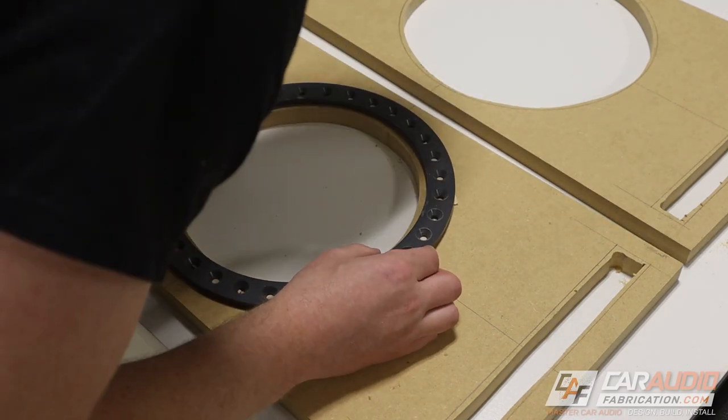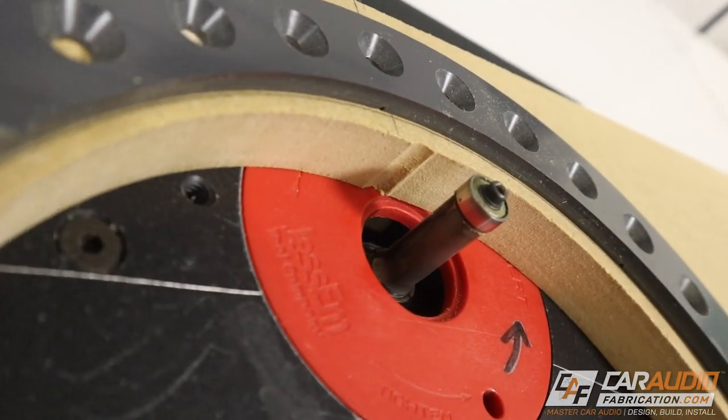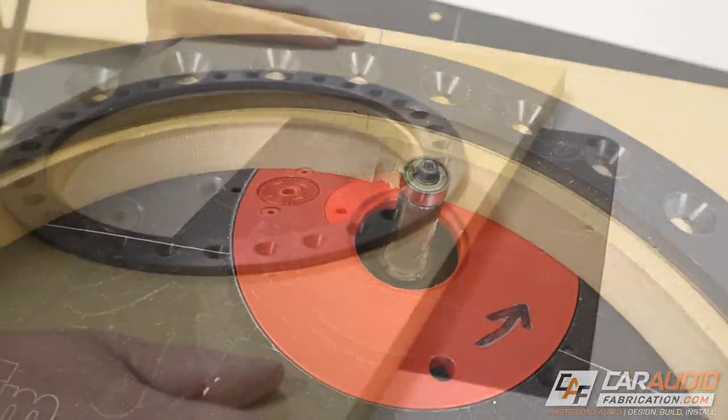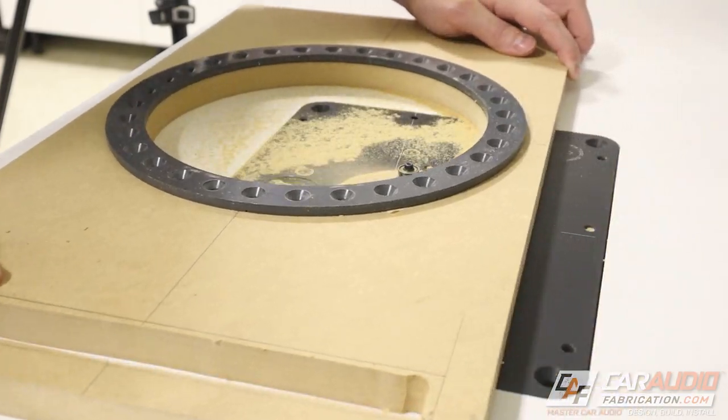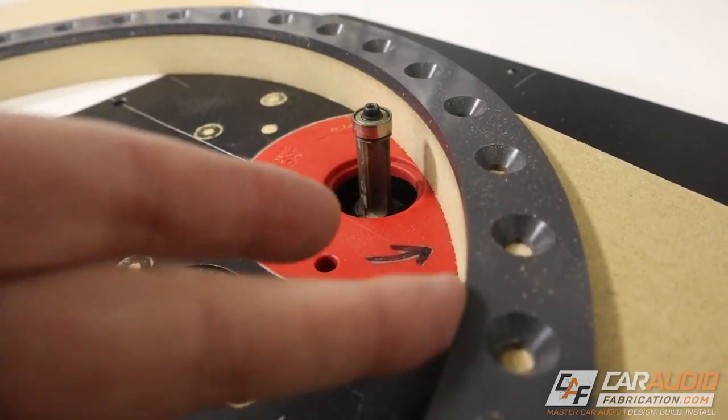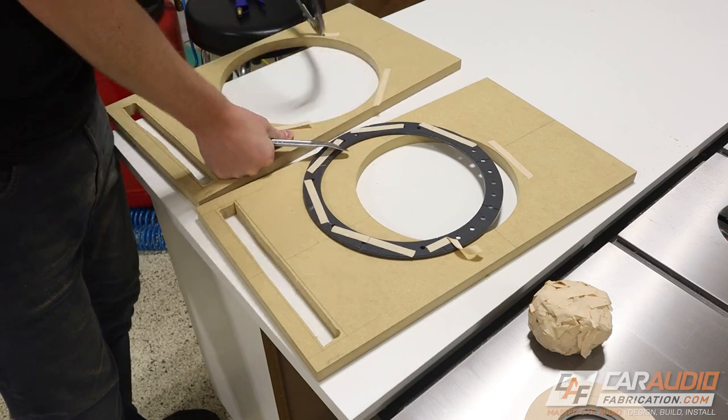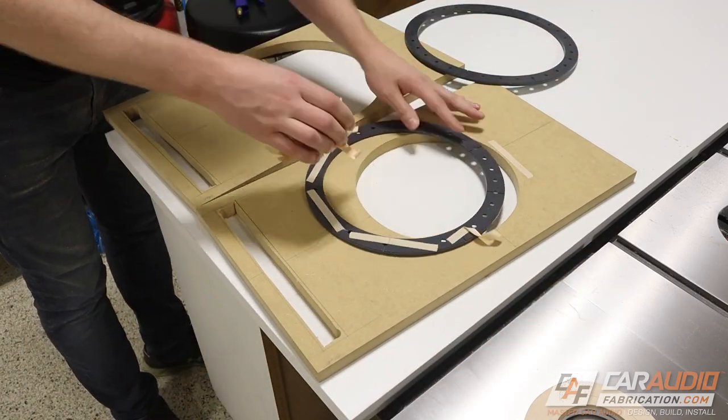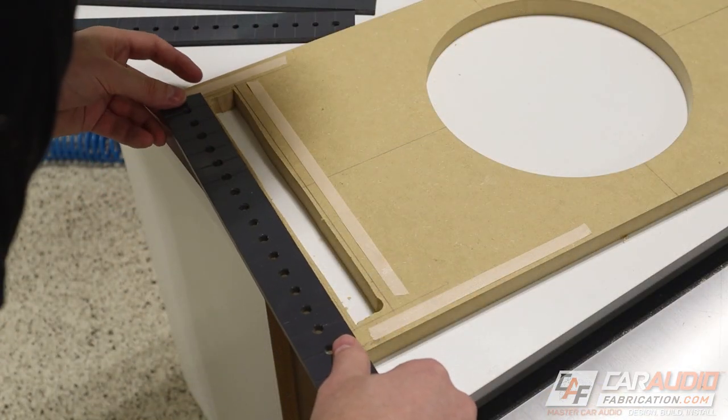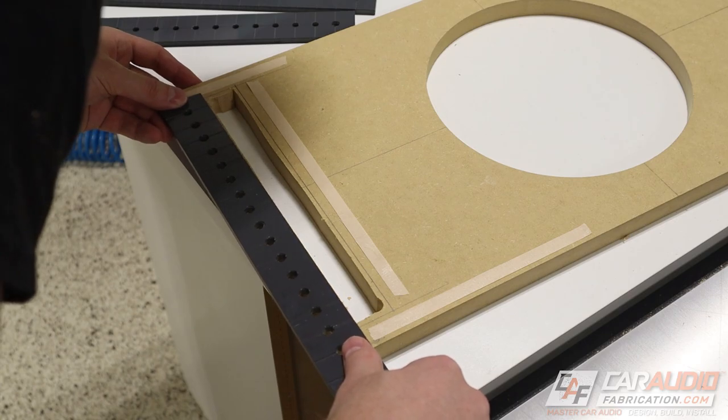So right now I'm sticking the template on using double-sided template tape. And then here over at the router, the top bearing rides against that template and then cuts what's down below. This really gives us a nice, perfect cut and finish. Now you can see that I'm removing these templates from the boards and getting rid of that template tape.